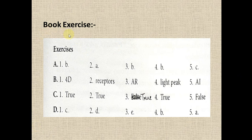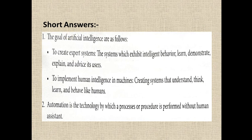Let's start your short answers. First: what is the goal of artificial intelligence? To create expert systems and to implement human intelligence in machines — to create systems which exhibit intelligent behavior, learn, demonstrate, explain and advise its users. And to implement human intelligence in machines — creating a system that understands, thinks, learns and behaves like humans. This is the goal of artificial intelligence.